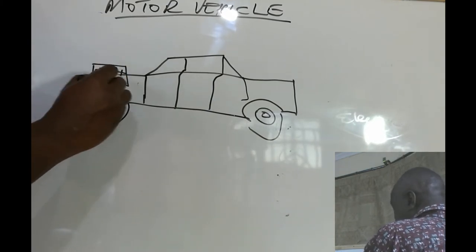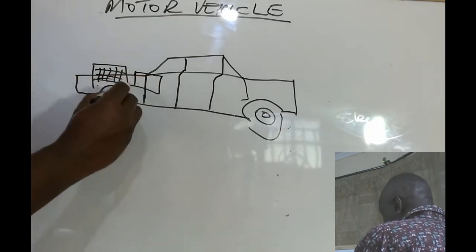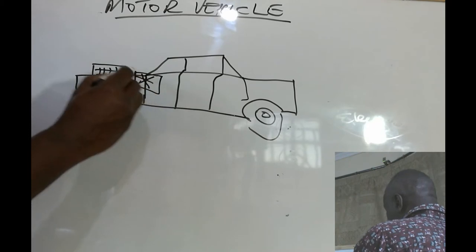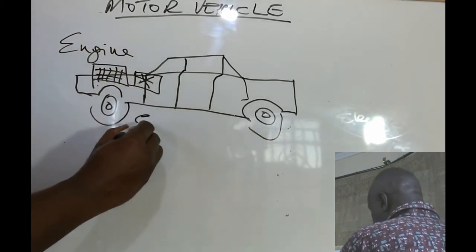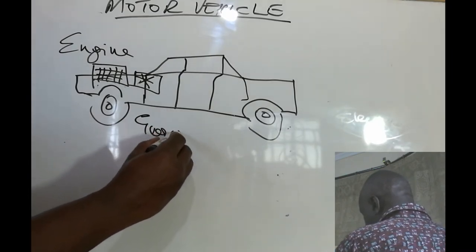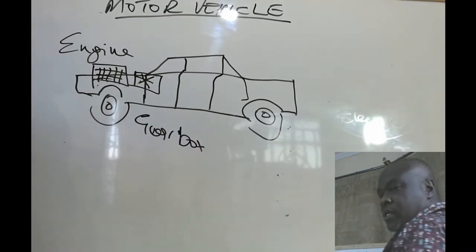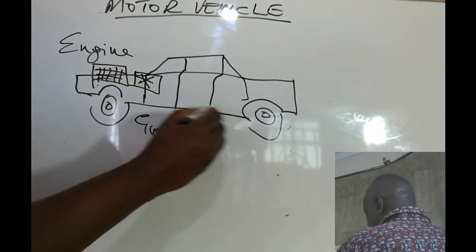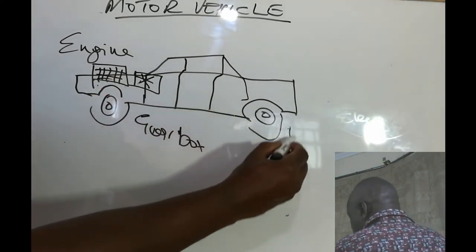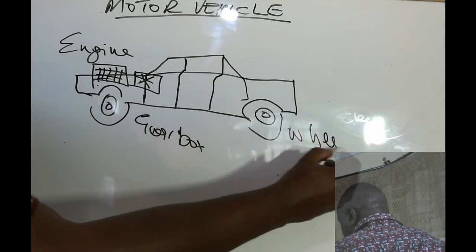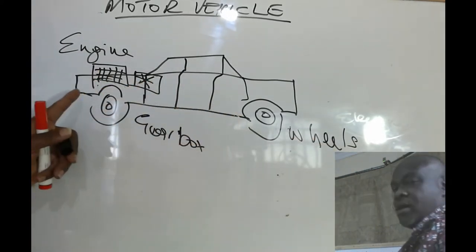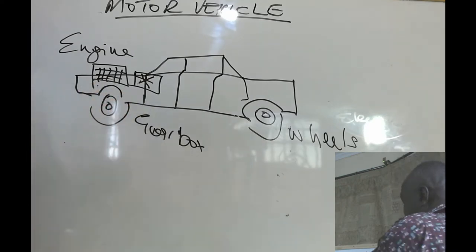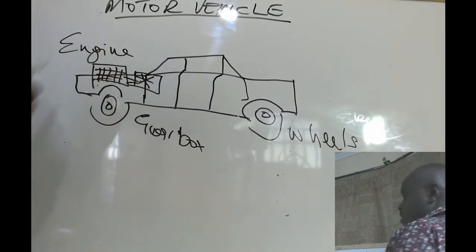So your engine will be here. This is your engine. Then we have the gearbox. Then we have the wheels. So how are these connected? The engine is connected to the gearbox.